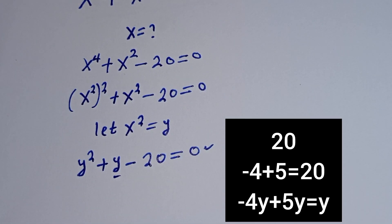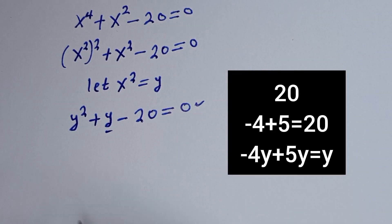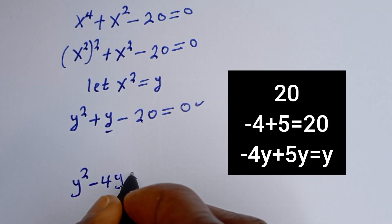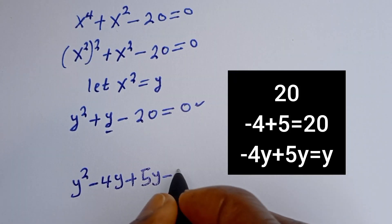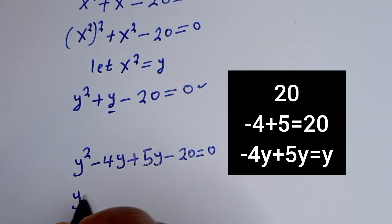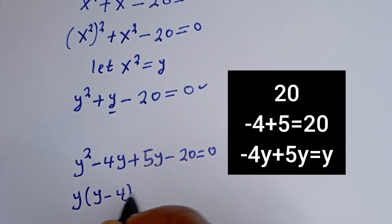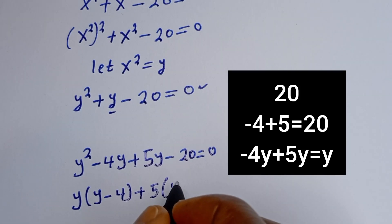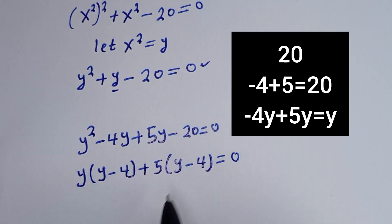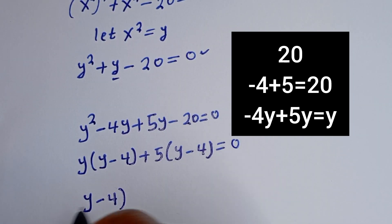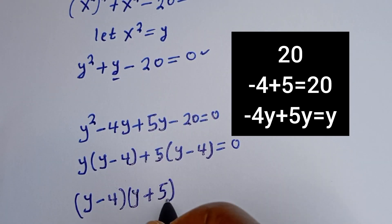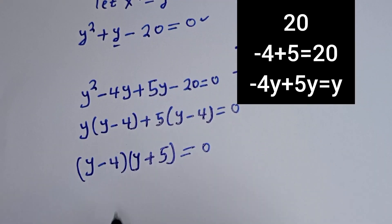Now let's substitute this here. We have y squared minus 4y plus 5y minus 20 is equal to 0. Then this is y bracket y minus 4, plus 5 bracket y minus 4, is equal to 0. Here y minus 4 is common, giving y minus 4 times y plus 5 is equal to 0.